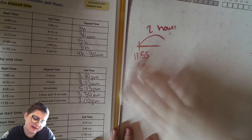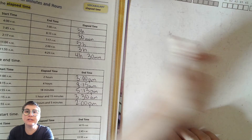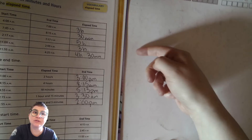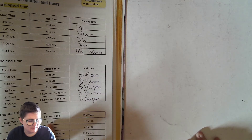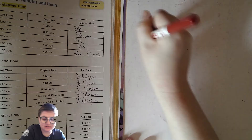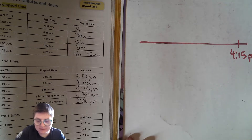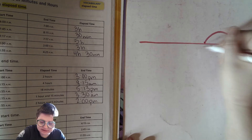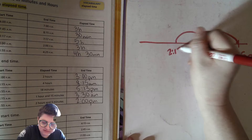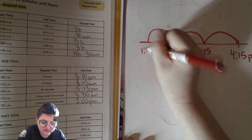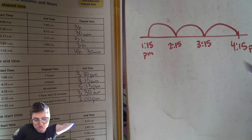Now we're going to find the start time, so instead of going forward on our timeline we're working backwards. What's the start time if something lasted three hours and ended at 4:15 PM? Here's 4:15 PM. Hop back one hour — that's 3:15. Two hours — that's 2:15. Three hours — that's 1:15. We haven't crossed over 12, so it's still PM. Three hours before 4:15 PM is 1:15 PM.